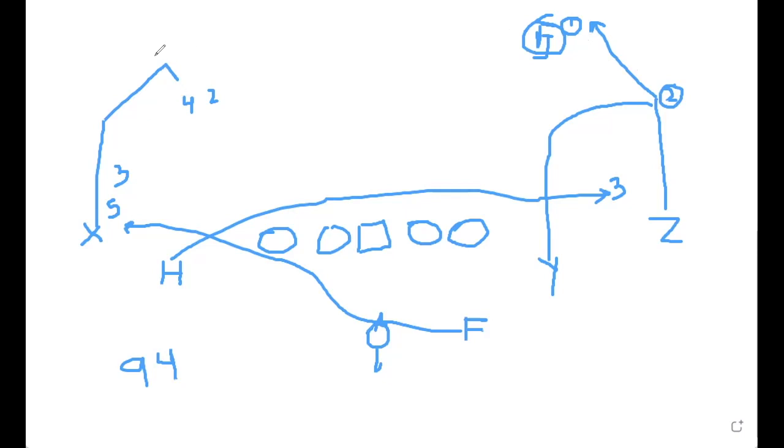If we catch this free safety running across the field, we just tag the skinny post on this side and now you have an easy touchdown on the backside. The first tag that goes in is the skinny post to the X on this example.